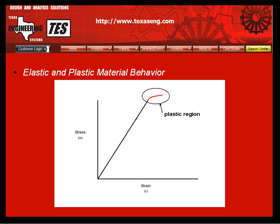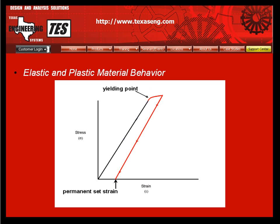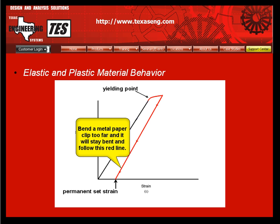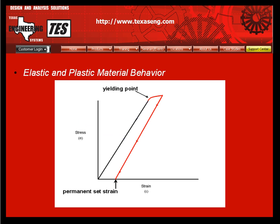In most metals, this can cause a phenomenon known as permanent set. This means when you unload the structure to zero load, shown by the continuing red line pointing towards zero stress, the strain will not be zero. You can directly observe this effect when you bend a metal paper clip too far — it stays in a bent position when you remove the load. Note that SolidWorks Simulation Premium will not model this plasticity effect. However, since many people consider failure at the yield point, you probably won't need to do this.